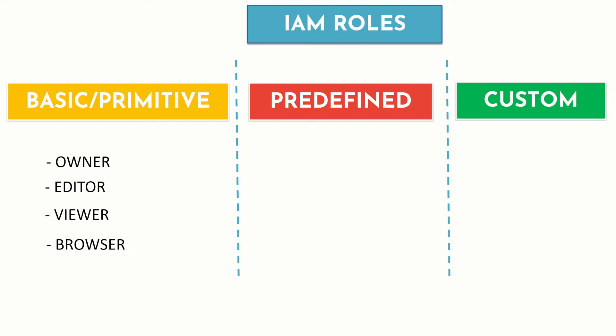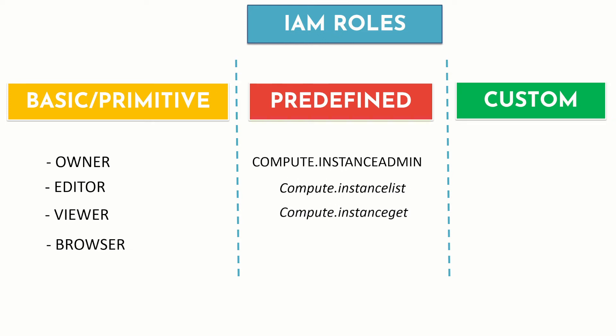IAM provides additional predefined roles that give granular access to specific Google Cloud resources and prevent unwanted access to other resources. For example, the compute.instanceAdmin role has permissions such as compute.instances.list, compute.instances.get, and compute.instances.delete. When you use this role, all permissions within it are inherited and you cannot alter its behavior — you cannot add or delete permissions from it. These roles are created and maintained by Google, and Google automatically updates them as necessary, such as when a new feature or service is added.